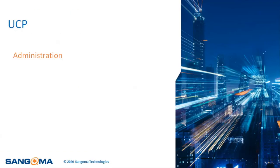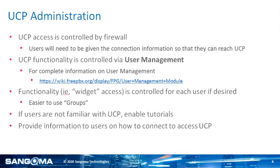There are two parts to the UCP. First is the administration section — we'll walk you through what it looks like from an administration standpoint. And then there's the user configuration standpoint. We'll walk through both in this section. From an administration standpoint, UCP access is controlled by the firewall within the PBX. You're going to need to set that up and provide that connection information to the users.